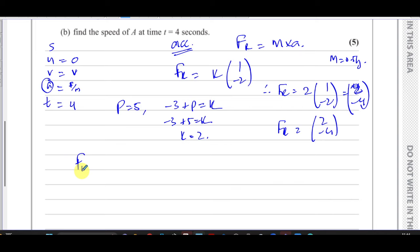We know that the resultant force is equal to the mass times acceleration. So the acceleration is going to be, we have the resultant force is 2 minus 4, that's equal to the mass which is a half times the acceleration. Therefore we can say a is equal to 2 times 2 minus 4, which is 4 and minus 8. So the acceleration is 4 minus 8.